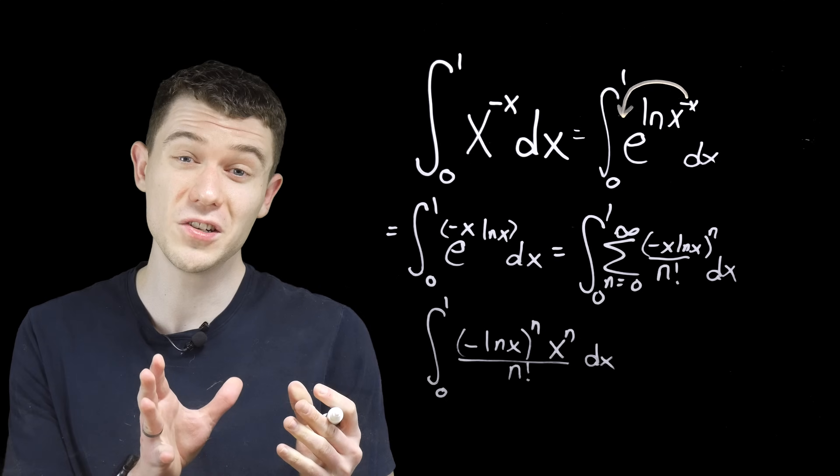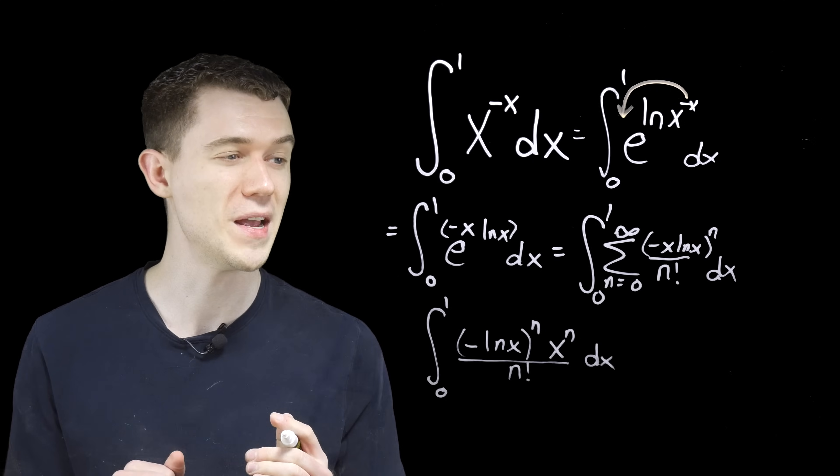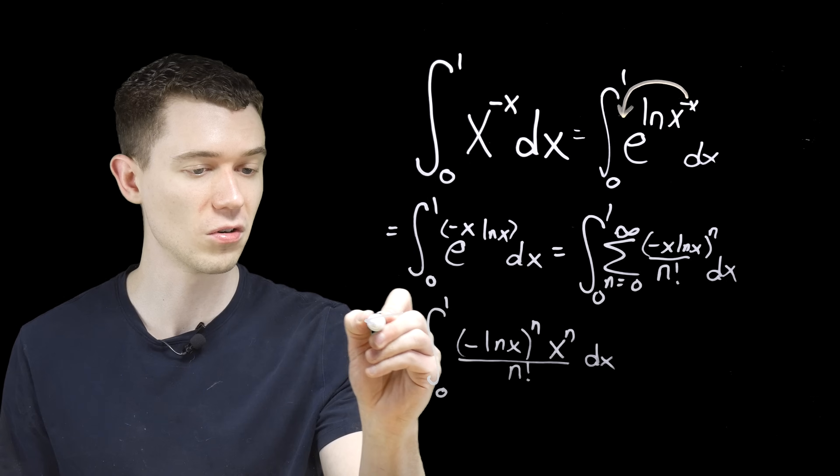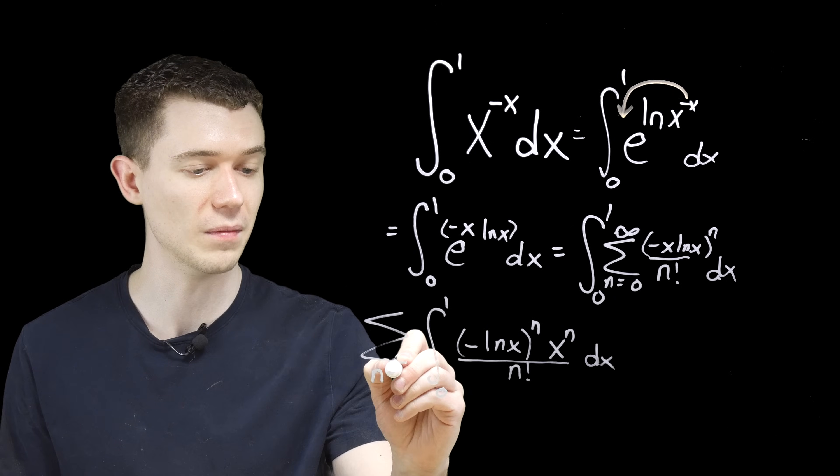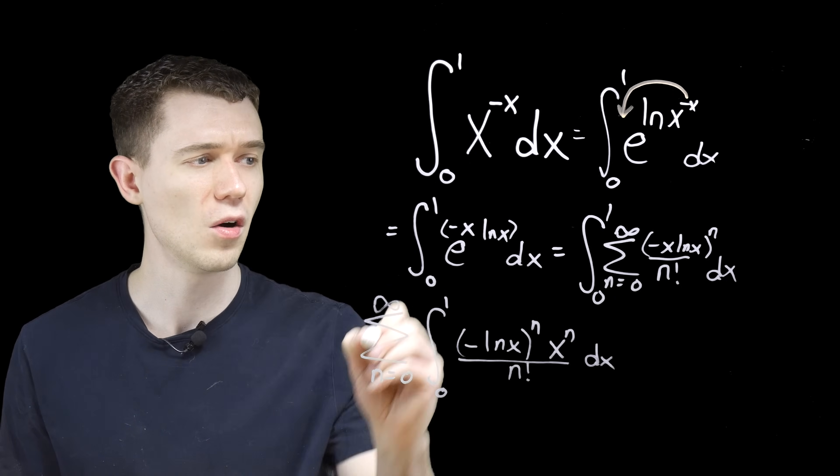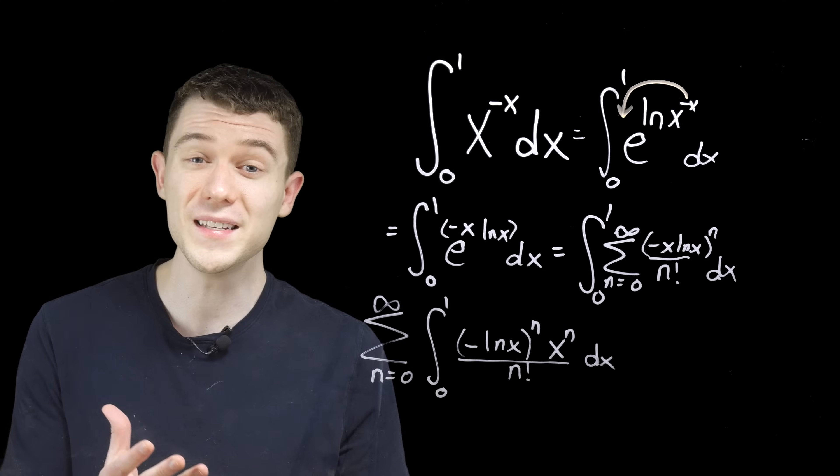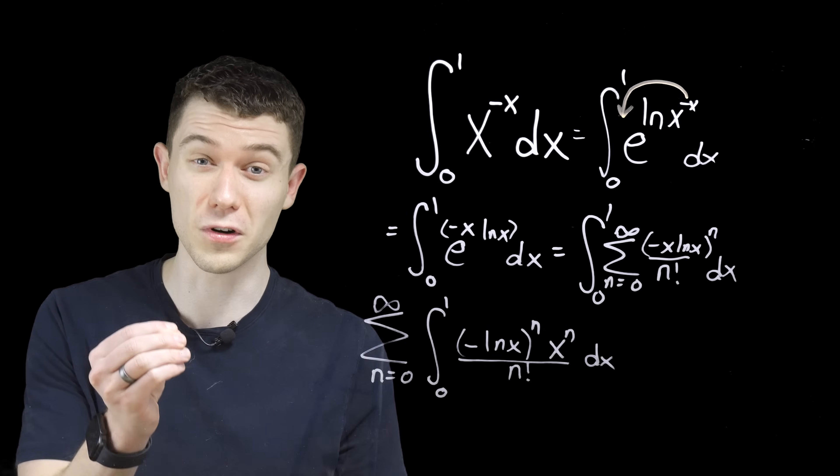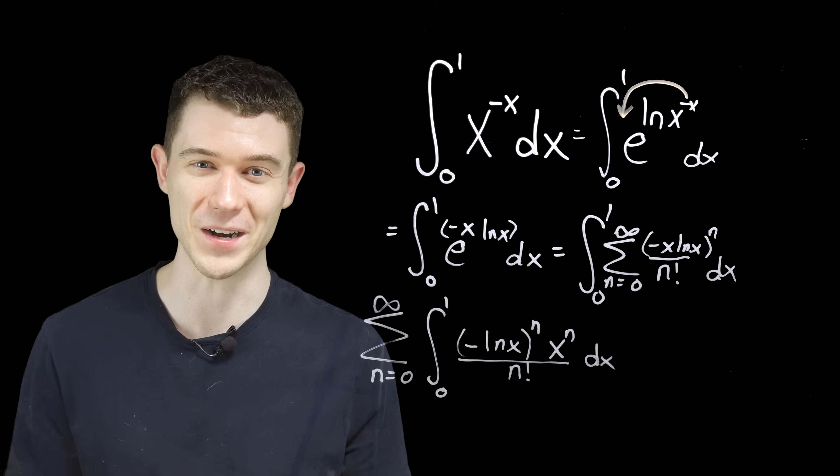And what we can actually do is we can interchange the summation and the integral symbol. We'll put the integral inside of the sum. And you might ask, well, why can we do this? And the reason is the uniform convergence of this sum. And that's all I'm going to say about that.